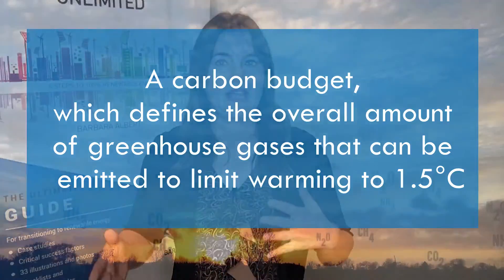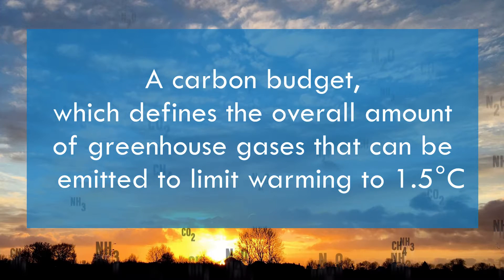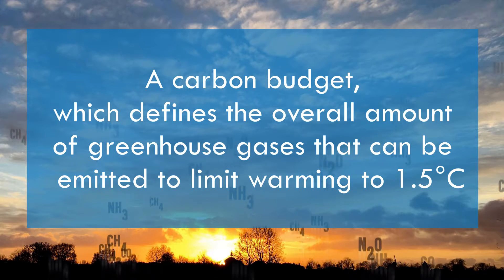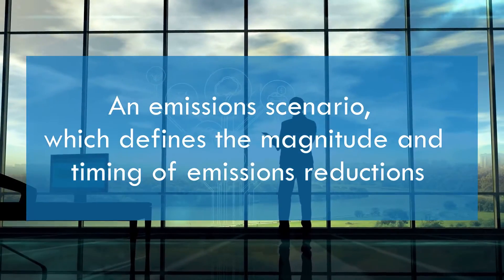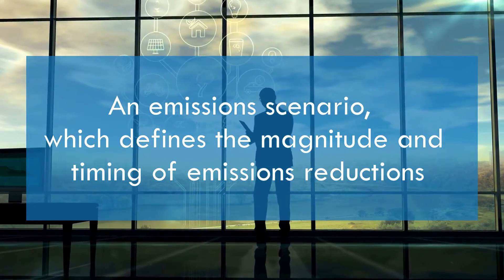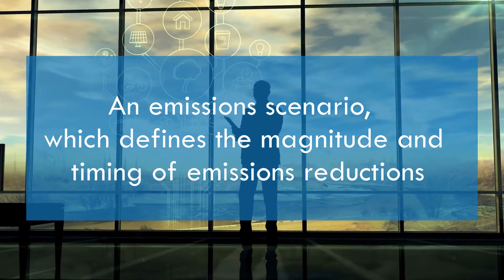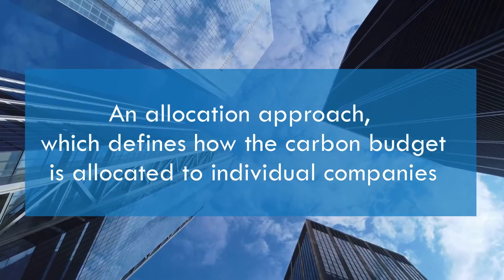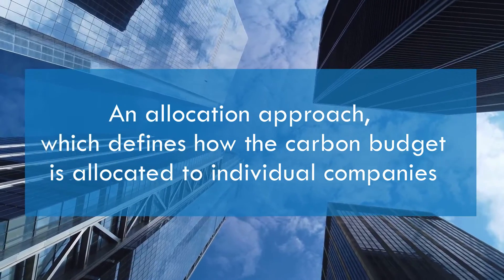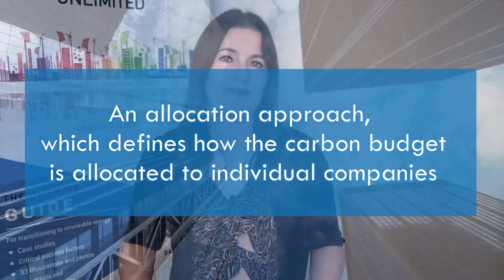Firstly, a carbon budget which defines the overall amount of greenhouse gases that can be emitted to limit warming to one and a half degrees Celsius. Secondly, an emissions scenario which defines the magnitude and the timing of emissions reductions. And thirdly, an allocation approach which defines how the carbon budget is allocated to individual companies.